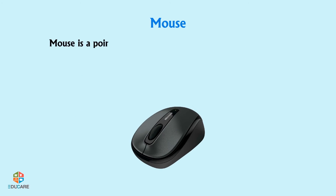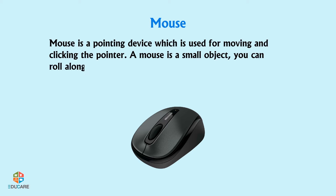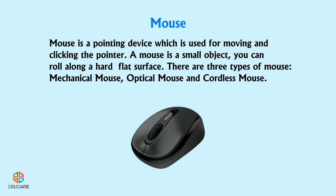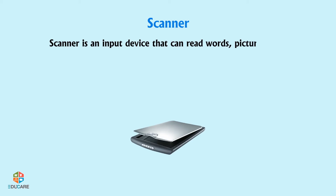Mouse: A mouse is a pointing device used for moving and clicking the pointer. It is a small object you can roll along a hard flat surface. There are three types of mouse: Mechanical mouse, Optical mouse, and Cordless mouse.